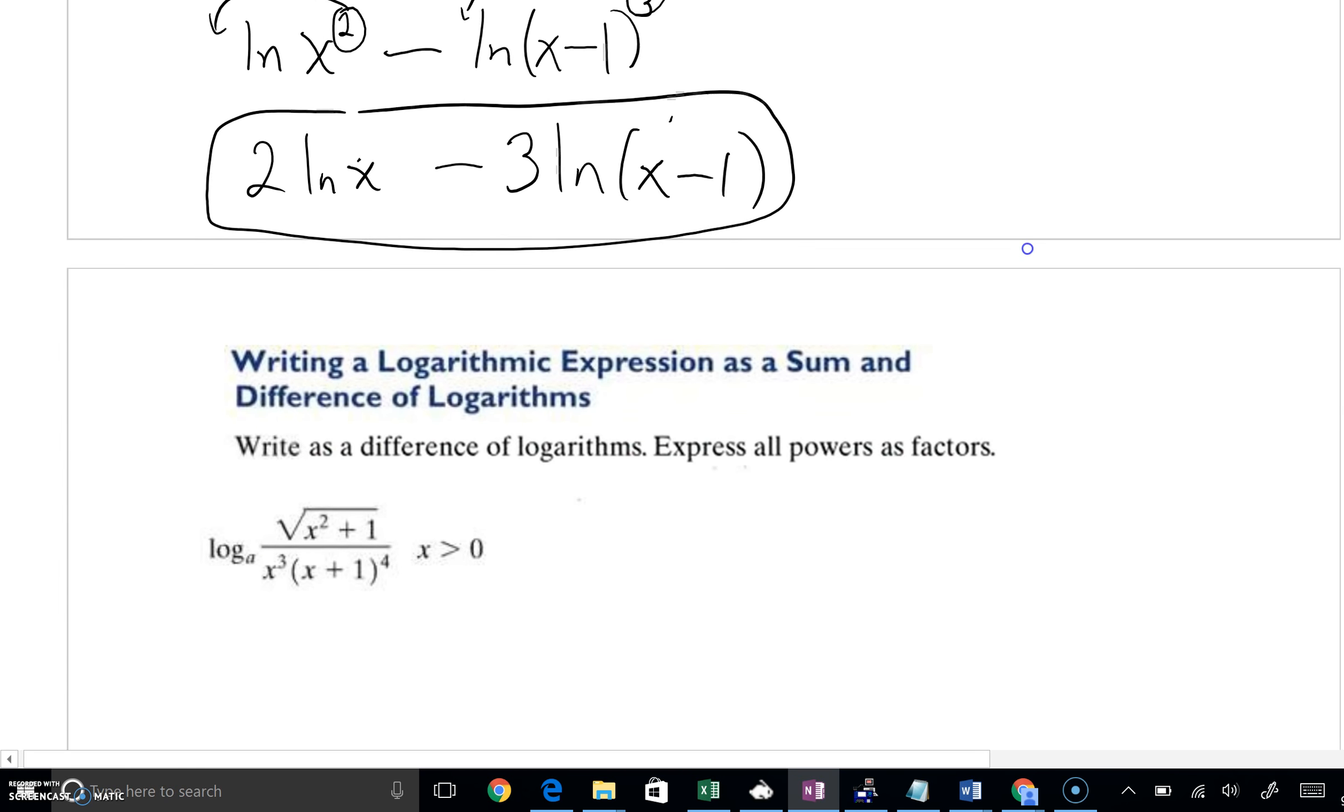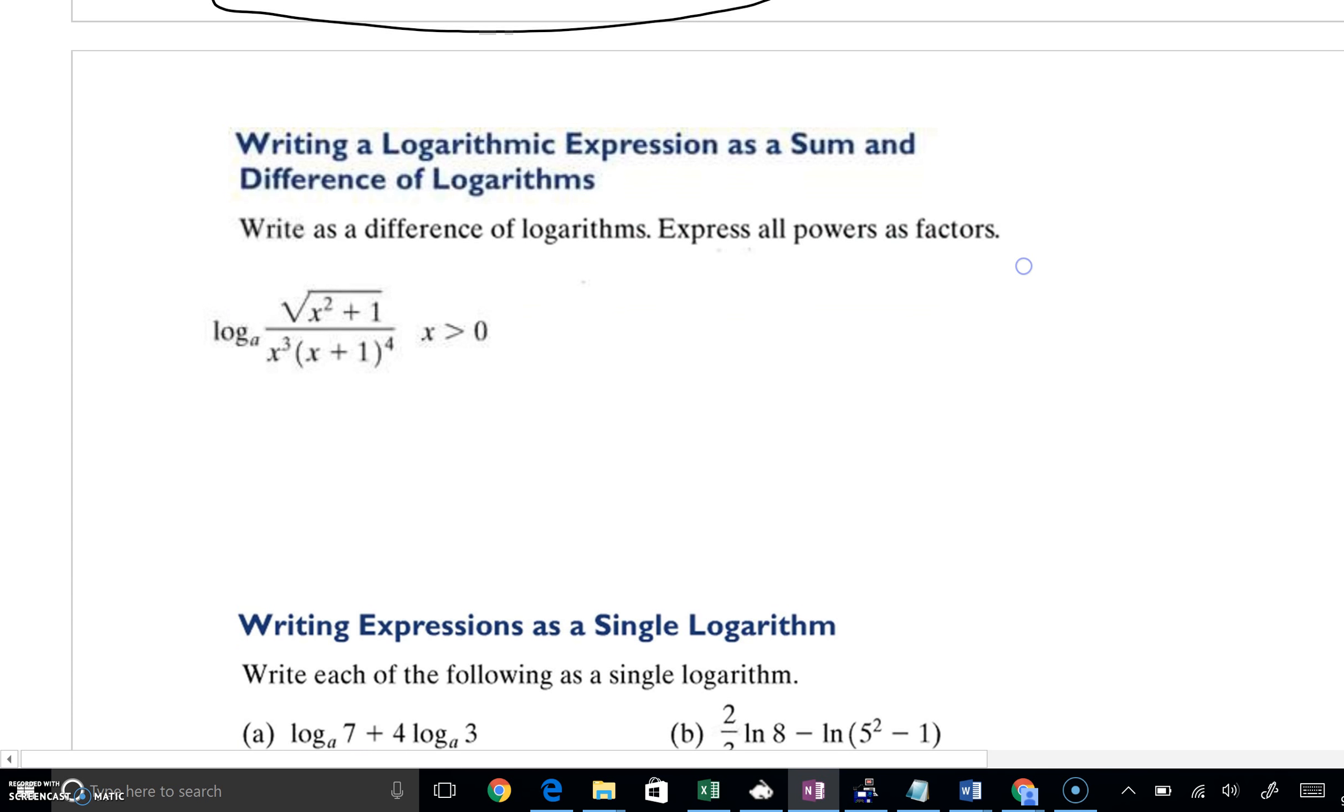So very often what you're going to see is actually you have to do multiple steps. You're going to have to use both addition and subtraction. Now, I'm going to write at the top log base A of M times N. Of course, that was really log base A of M plus log base A of N. We've got your multiplication linked to addition. We also had log base A of M all over N. This becomes log base A of M minus log base A of N.